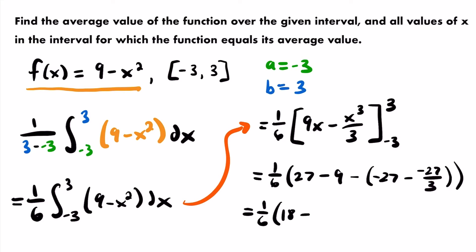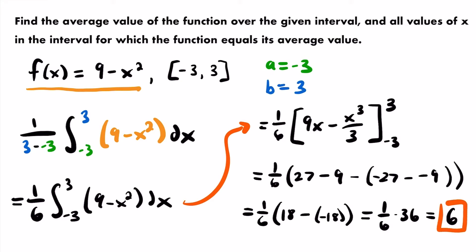Negative 27 divided by 3 is negative 9. But we're subtracting negative 9, which is the same as adding 9 to negative 27, giving negative 18. So we're subtracting negative 18 — those two negatives cancel, giving us 18 plus 18, which is 36. So this equals one-sixth times 36, and 36 divided by 6 is 6. The average value of this function over the interval from negative 3 to 3 is 6.